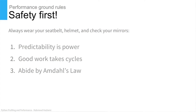Let's set some ground rules for performance. Safety first — you've got to wear your seat belt, your helmet, check your mirrors. If you're going to jump in the F1 car and go fast, you have to take these precautions. Number one: predictability is power. Number two: good work takes cycles, good work takes time. When your boss wants something done in a day, you say, do you want it good or do you want it fast? And we all want good first.